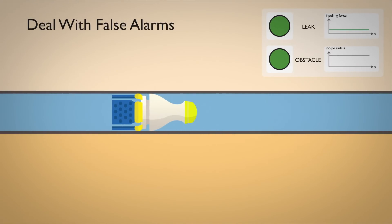Now one may ask, how about false alarms? The robot can distinguish obstacles from leaks.